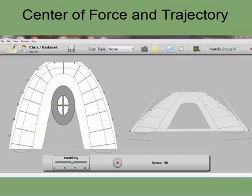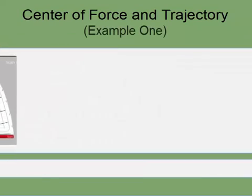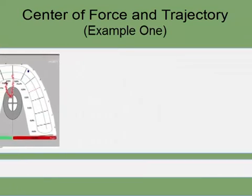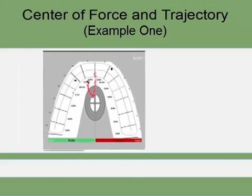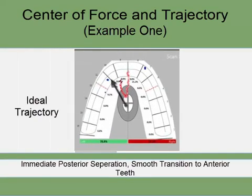Here are some examples of the center of force icon and trajectory during a left lateral excursion. The first example shows the force moving smoothly and directly towards the anterior left region of the arch, indicating immediate posterior separation and a smooth transition of force, implying good anterior guidance.